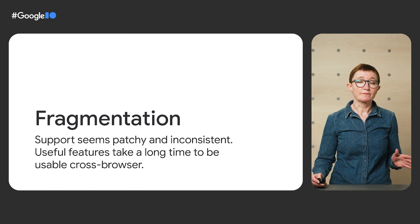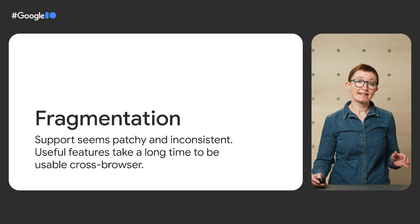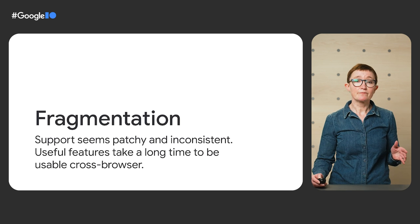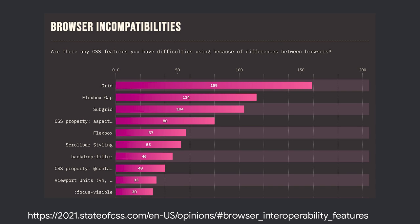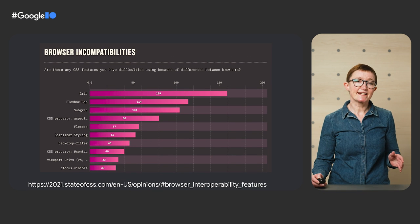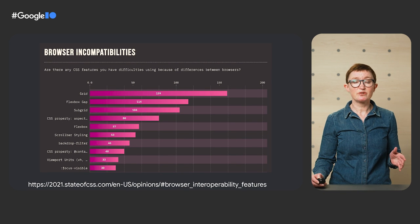This is just one example of the problem. We see this fragmentation of support again and again, with different browsers taking the lead in landing something, and then a gap of months to years before it lands in the other browsers. To add to this problem, as soon as Gap became available at all in Flexbox, folk like me started making demos and talking about this feature. And this was a bit confusing for people who tried the demos and found it didn't work in their browser. They could go check Can I Use or MDN, but it's all extra work and takes time. It's frustrating to get excited about something and then find that you can't really use it, especially when this pattern keeps repeating.